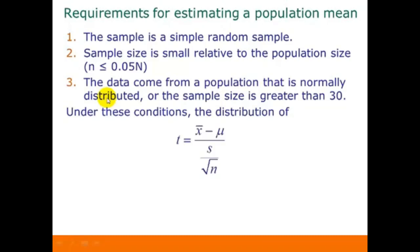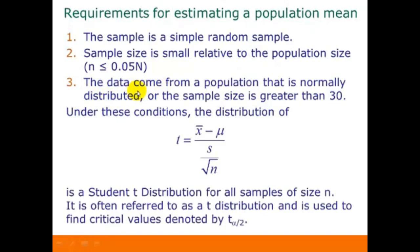Under these conditions, the distribution of this value is a Student t-distribution for all samples of size n. This is often referred to as a t-distribution, and it's used to find critical values, which we denote by t of alpha over 2. The difference between what we're doing here and what we've done before is that instead of using z-scores from the standard normal distribution, we're using t-scores that come from the t-distribution.